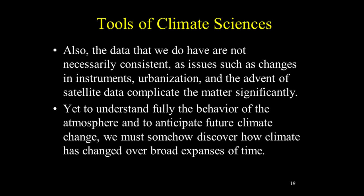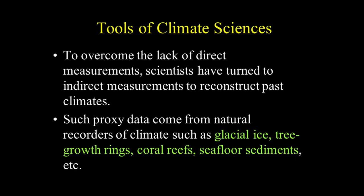To understand fully the behavior of the atmosphere and to anticipate future climate change, we must discover how climate has changed over broad expanses of time. To overcome the lack of direct measurements, scientists have turned to indirect measurements to reconstruct past climates. Such proxy data come from natural recorders of climate, such as glacial ice, tree growth rings, coral reefs, seafloor sediments, and more.